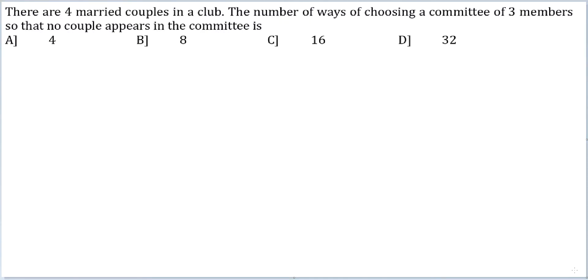Let's look at this question. There are 4 married couples in a club. The number of ways of choosing a committee of 3 members so that no couple appears in the committee is.